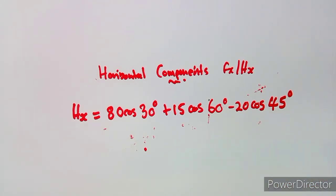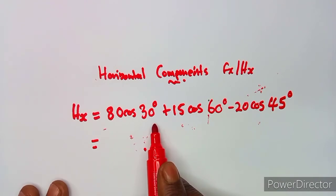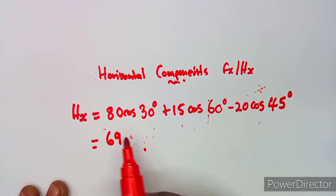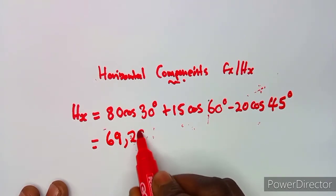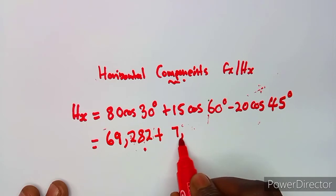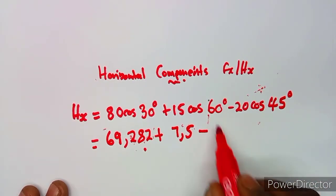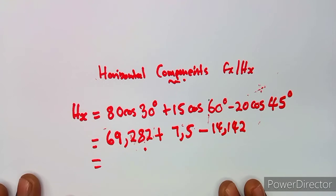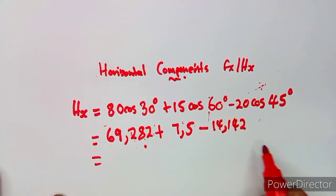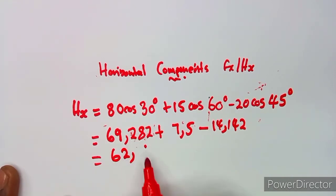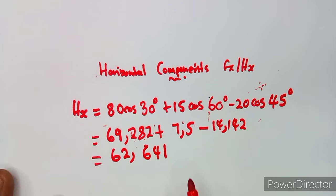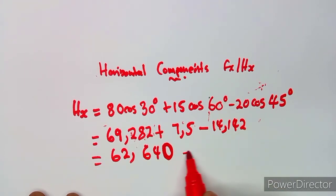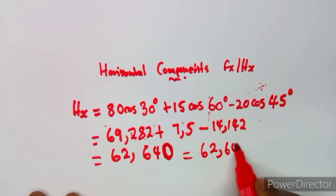Whenever you are working with these typical questions, it's best to understand how to apply each part. So the first term gives us 69.282, plus this one gives us 7.5, minus this one gives us 14.142 — rounded to three decimal places. If you combine these, add everything then subtract, you'll be left with 62.641. So our horizontal component HX is 62.64.